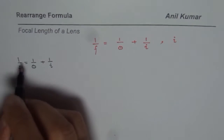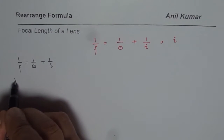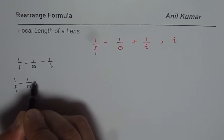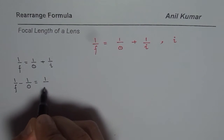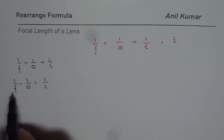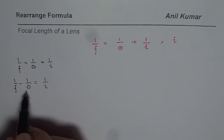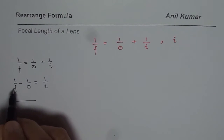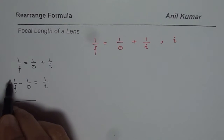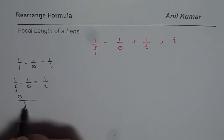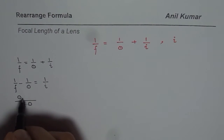We will take 1 over O to the left side by subtracting it from both sides. What we get is 1 over f minus 1 over O equals 1 over I. Now we cannot just flip this fraction, so we need to take a common denominator. Multiplying the first part by object distance gives us object distance on top and f times object distance in the denominator.